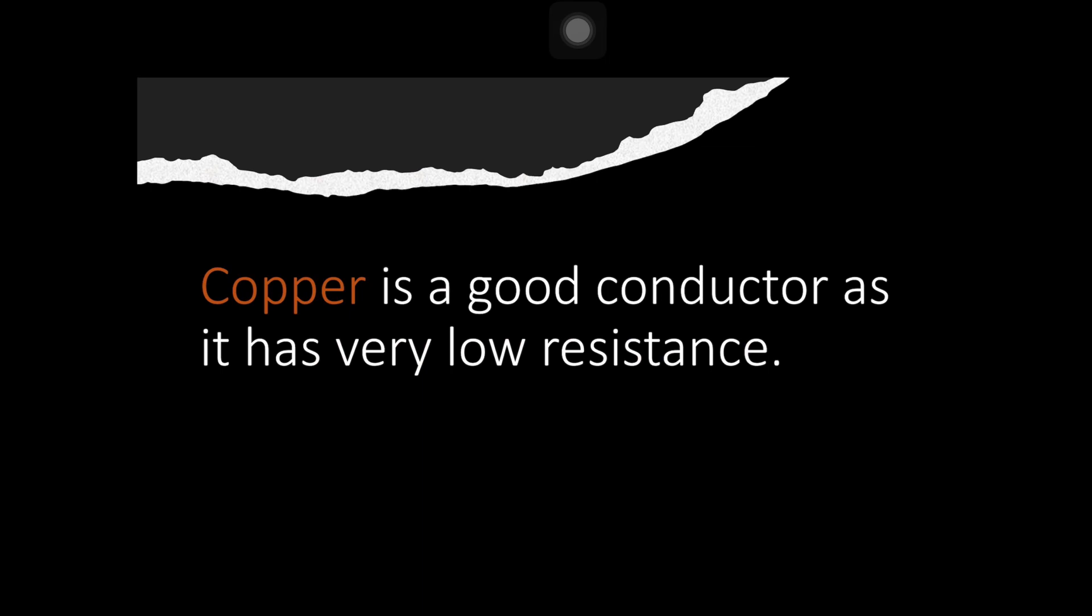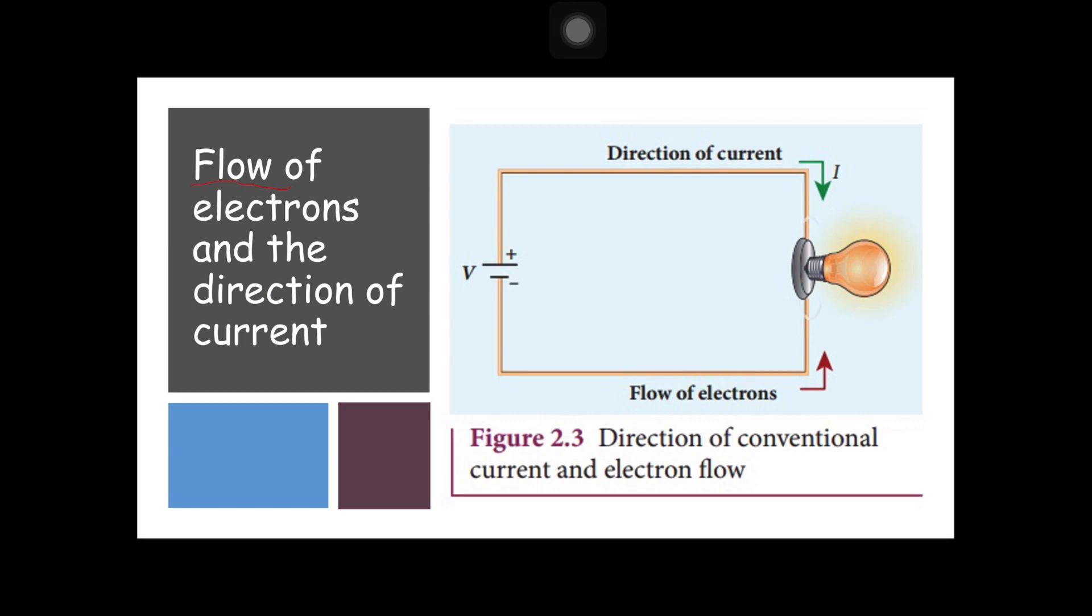One example of a good conductor is copper (Cu). This is a good conductor as it has very low resistance. Looking at Figure 2.3, this shows the flow of electrons and the direction of current. We have positive charge and negative charge. For the positive charge, the direction of current. For the negative charge, the flow of electrons.